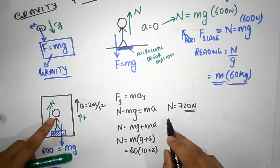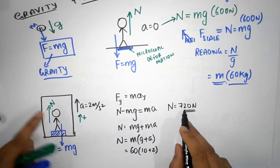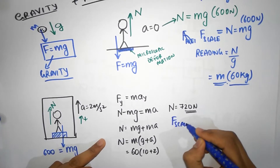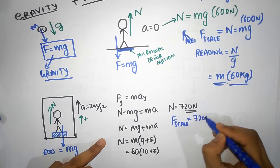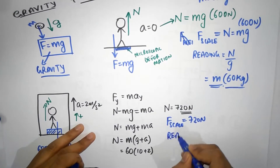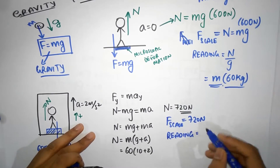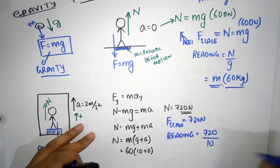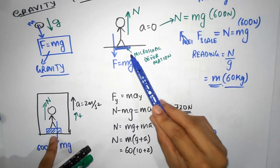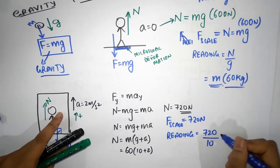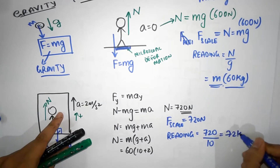Since the scale is putting a normal force of 720 Newtons on this person, he also pushes back with 720 Newtons. Therefore, the force on the scale is also 720 Newtons. The reading on the scale will be the force on the scale divided by g — that's 720 divided by g — and that's how scales are manufactured, to automatically divide by g so they give you a reading in mass. The reading will now be 72 kilograms.